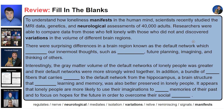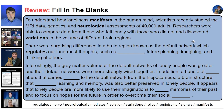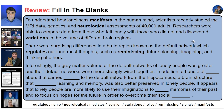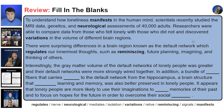There were surprising differences in a brain region known as the default network, which regulates our innermost thoughts, such as reminiscing, future planning, imagining, and thinking of others. Interestingly, the gray matter volume of the default networks of lonely people was greater, and their default networks were more strongly wired together.